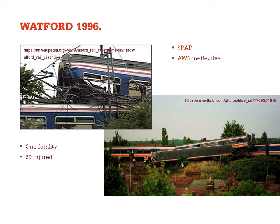Two years later we had another incident at Watford in 1996, again a SPAD, again the AWS was ineffective, with one fatality and 69 people injured. I've mentioned twice that the AWS was ineffective. One reason is that while it gives the driver an audio warning, the system doesn't then monitor what the driver does after that. They get the warning, acknowledge it — if they don't acknowledge it in time emergency brakes come on — however if they do acknowledge it, the system doesn't monitor whether the driver actually starts slowing the train down.